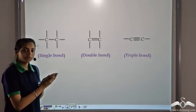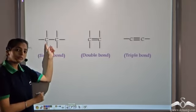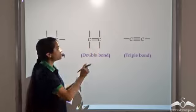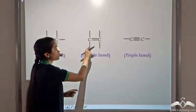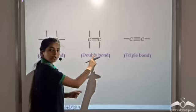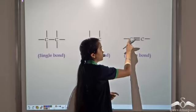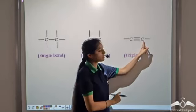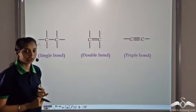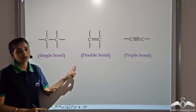Carbon links to itself — that is the property of catenation. It can link to itself by forming a single covalent bond. In another case, carbon links to itself by forming a double covalent bond. In each case, carbon is forming four covalent bonds. Carbon can also link to itself by forming a triple bond. In each case, to satisfy the octet rule, carbon forms four covalent bonds. It can link to itself either by a single bond, double bond, or a triple bond.